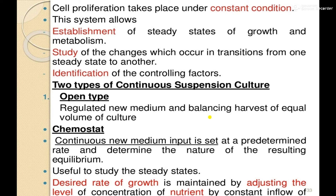Chemostat: in this system, continuous new medium input is set at a predetermined rate to determine the nature of the resulting equilibrium. It is useful to study steady states. The desired rate of growth is maintained by adjusting the level and concentration of nutrients through a constant inflow of culture medium.